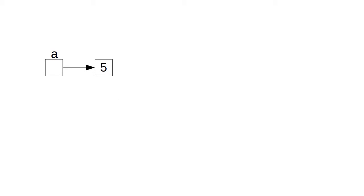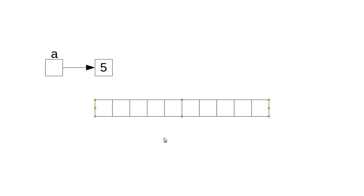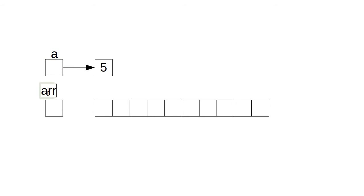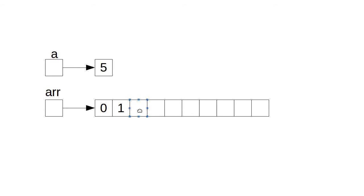So what happens with arrays? If I declare an array with 10 values in it, the picture that you have in your head is something like this. We'll call our array arr, and I make it refer to an array with 10 values in it. In reality, these values can't be blank — they're going to have something in them. So there is an array with 10 different values in it.